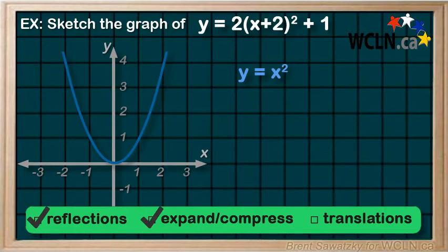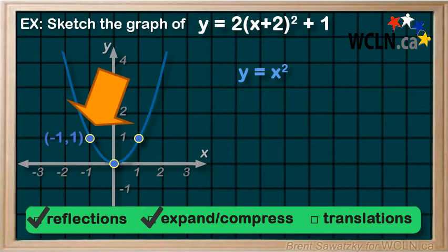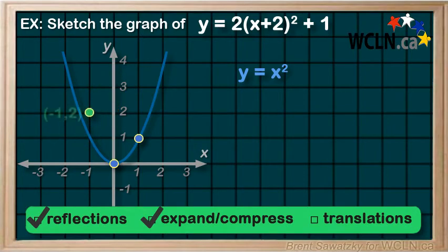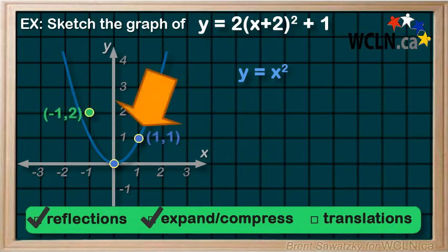So let's establish a few points to anchor our sketch, and here are three of them. Looking at this one, and multiplying the y value by 2, and we get (1,2). Multiplying the y value by 2, and we get (-1,2).